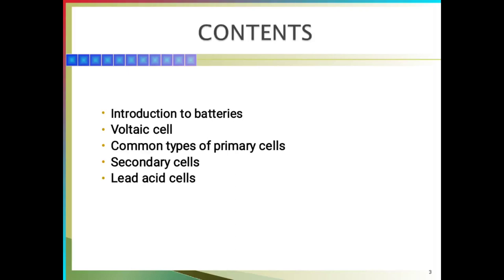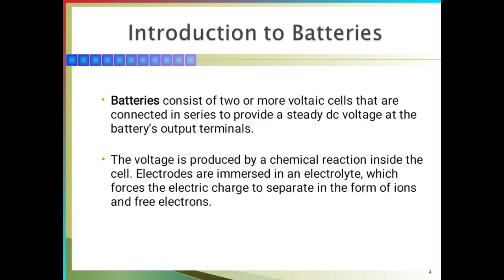In batteries, we are going to see about: introduction to the batteries, voltaic cell, common type of primary cell, secondary cell, and lead acid cells. Batteries are two or more voltaic cells connected in series to provide a steady DC voltage at the battery's output terminals. The voltage is produced by a chemical reaction inside the cells. Electrodes are immersed in the electrolyte, which forces the electrical charge to separate in the form of ions and free electrons.